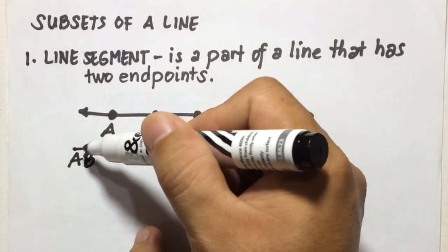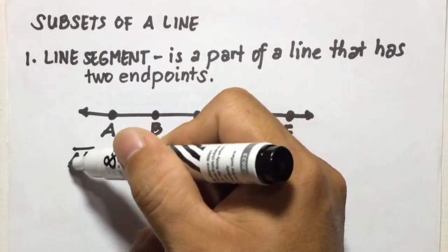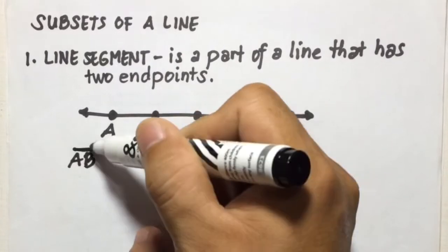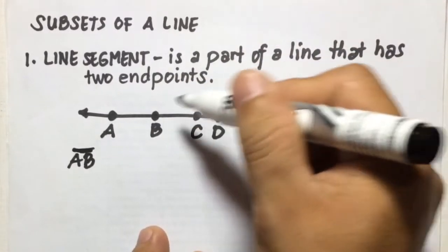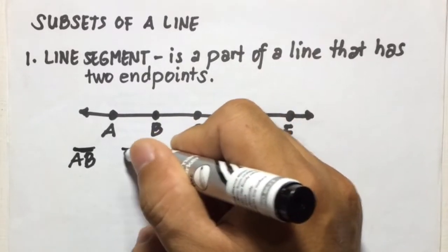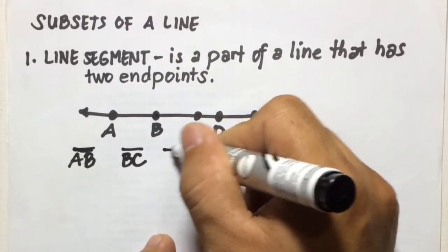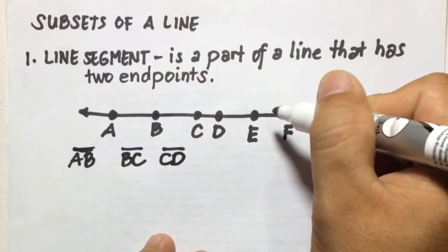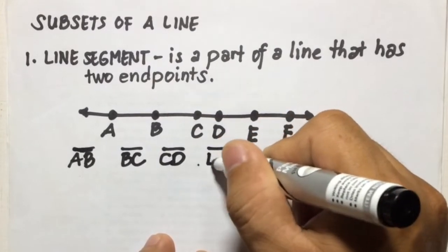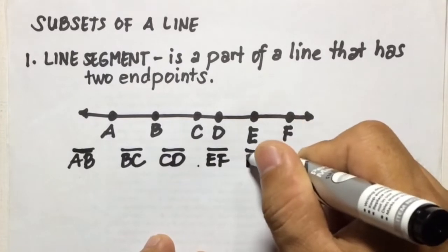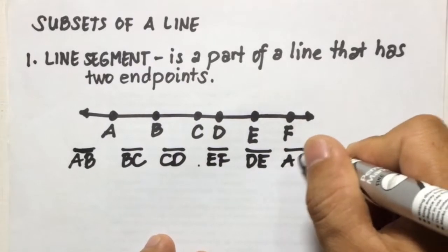When naming a line segment, you write the two letters or the two points — for example, AB — then put a line above them. Other line segments you can name in this line include line segment BC, line segment CD, line segment EF, line segment DE, and line segment AC, and so on.